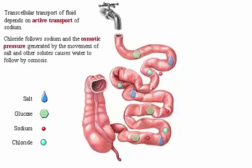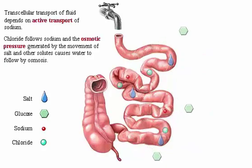Basically, chloride follows sodium, and the osmotic pressure generated by the movements of salt and other solutes into the interstitial space causes water to follow by osmosis. These transport mechanisms are similar to salt and water transport mechanisms in the proximal tubule of the kidney and may be reviewed in the urinary system module.